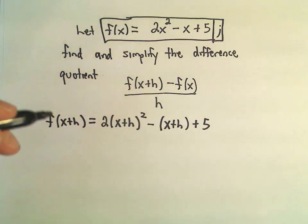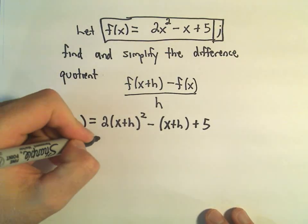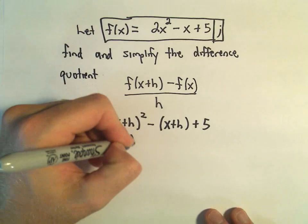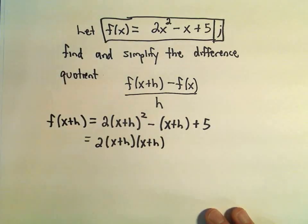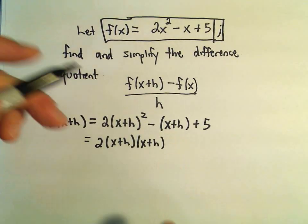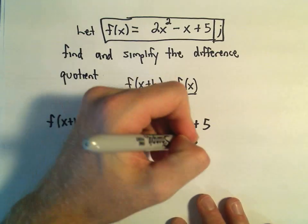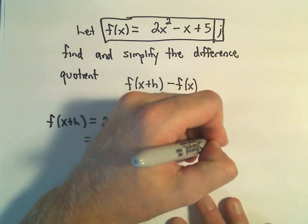I'm going to go ahead and simplify this down a little bit. So x plus h squared would be x plus h times x plus h. I'm going to distribute the negative in the middle, so that would give me negative x minus h, plus 5.